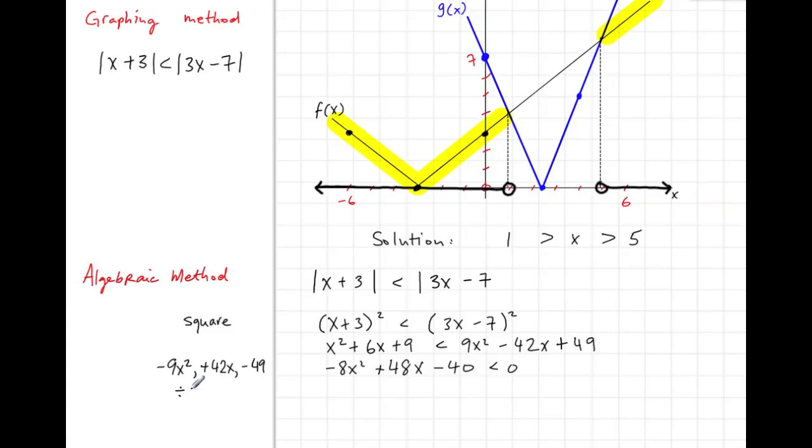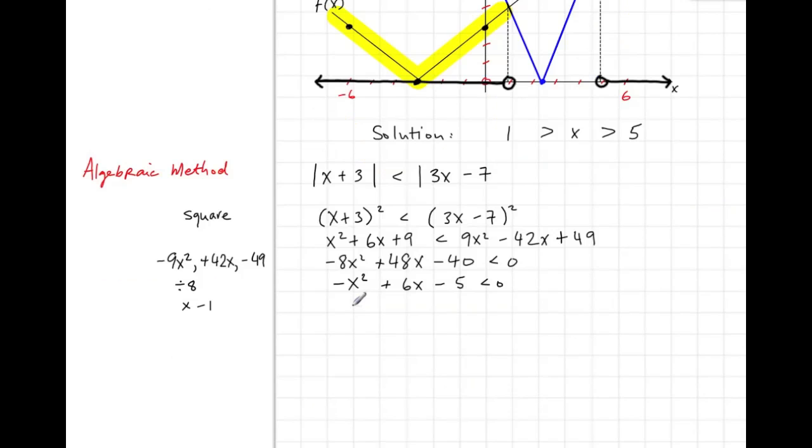We can divide everything by 8, giving -x² + 6x - 5 < 0. Now we multiply by -1 or change all the signs, but we also change the direction of the inequality - that's important. So x² - 6x + 5 > 0.